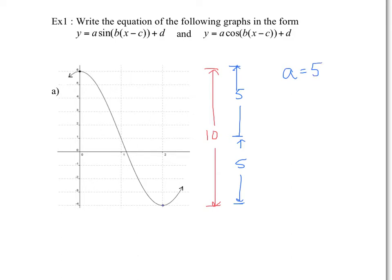Another value you can find using those values is D. D is the central axis, which is the midpoint between the two amplitudes. Visually, the maximum is 6 and the minimum is negative 4, so you know the midpoint is 1. To calculate it, find the average: 6 plus negative 4 divided by 2 gives 2 over 2, which is 1. So D equals 1.